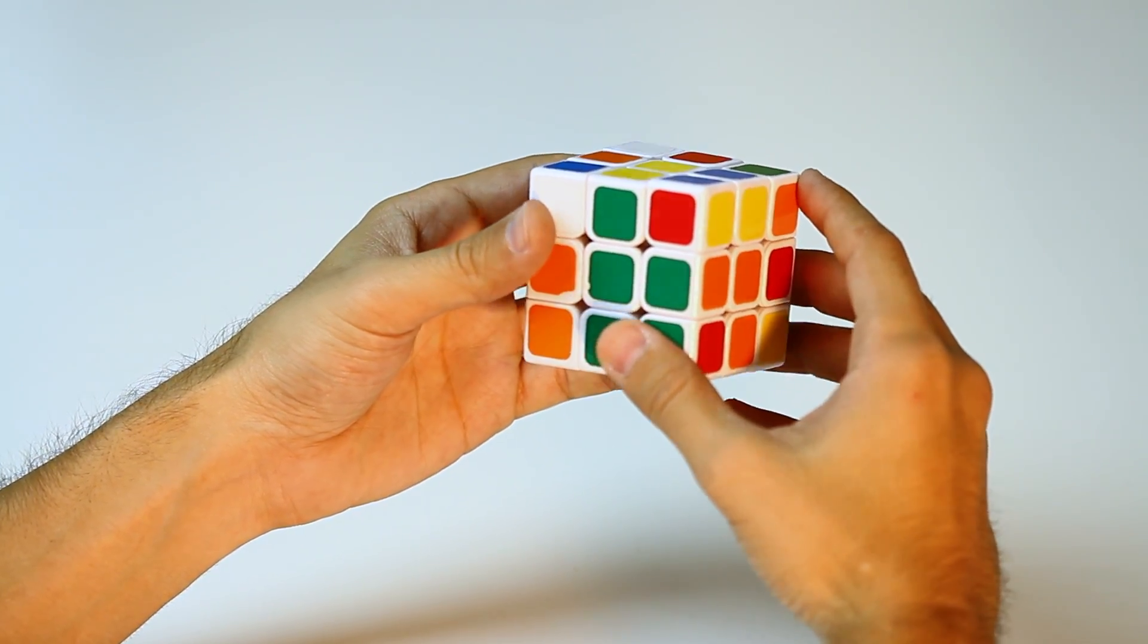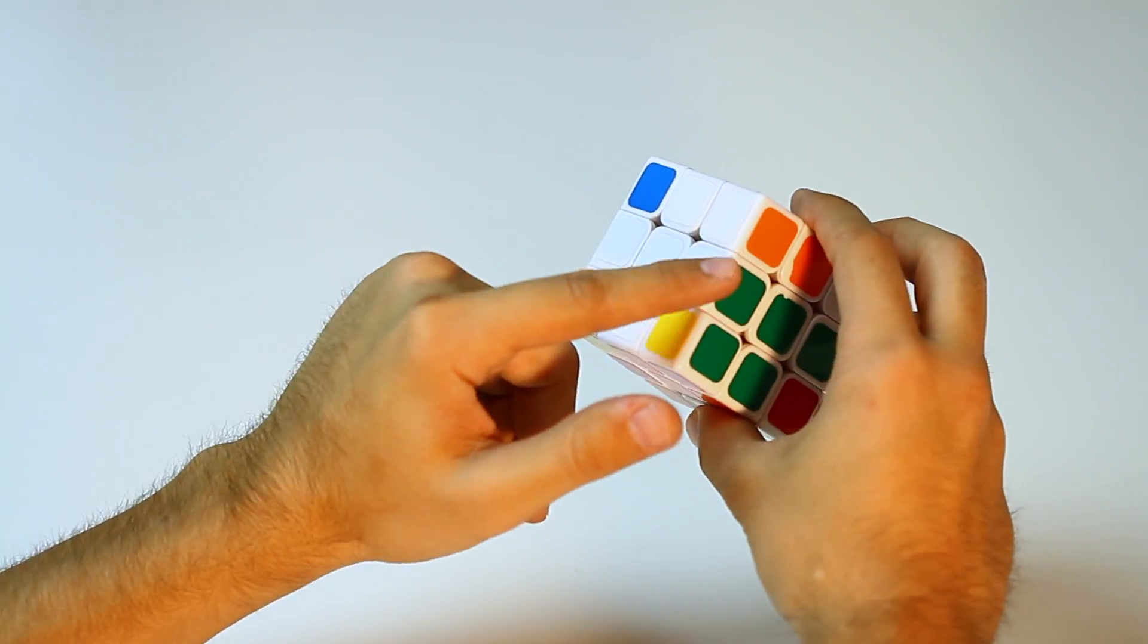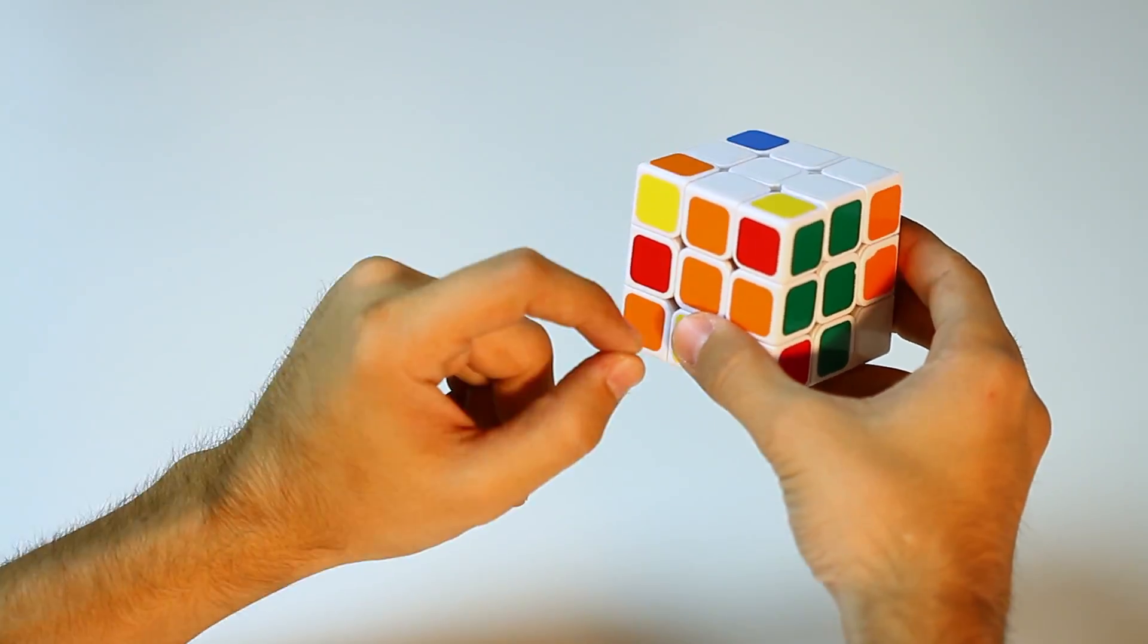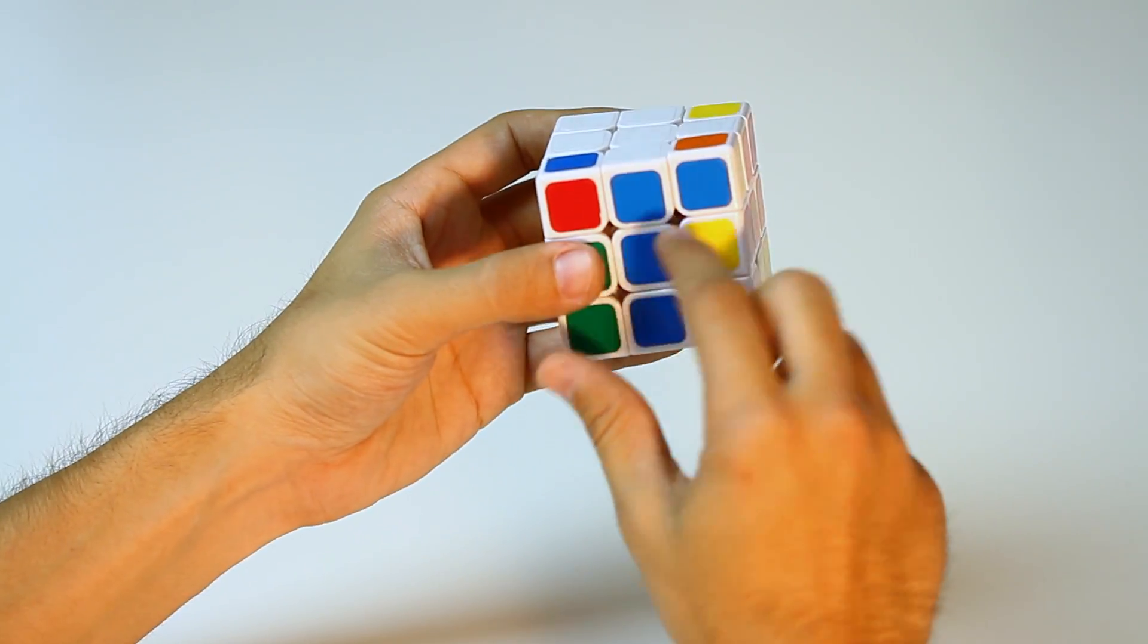And then we could flip the cube over, and there you see it. We have the white cross, and we know that it's done correctly, because we have both of the same colors in the middle on every side of the cube. We know that it's done correctly.